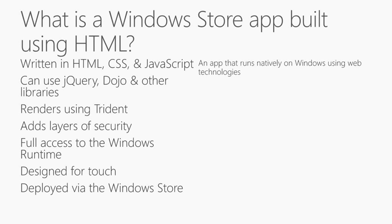Most importantly, because why would you build an application if you can't make money from it — we deploy it via a central Windows Store, which means you can package up your application, place it in the Windows Store, and charge people for it. We have lots of different ways that you can charge people. We'll allow you to sell it outright, or do freemium models where someone can buy an item or an upgrade from within the application. We manage all that through an API for the store. All sort of packaged in-app experience.